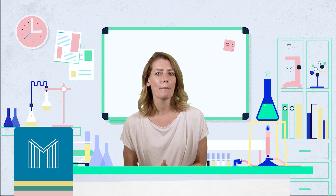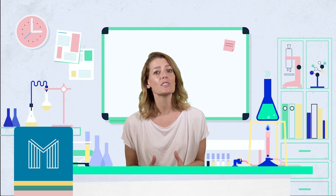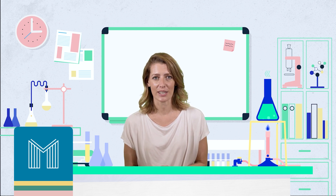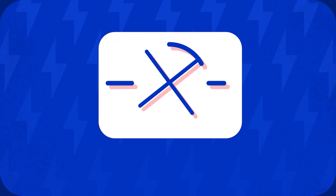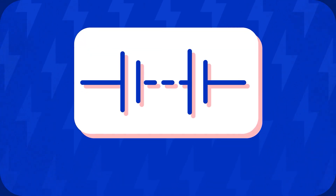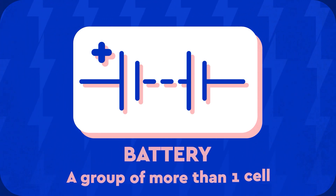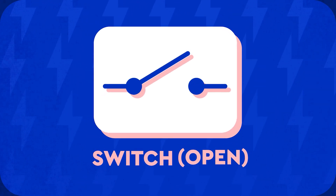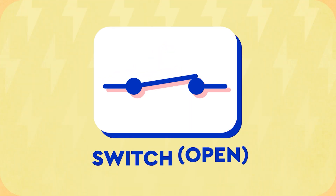You need to be able to remember and draw the circuit symbols for the following components, and you will also need to know what each component does. Some of these you will know from KS3. This is a lamp. This is a cell. This is a battery — a group of more than one cell. A switch can be shown as open or closed.